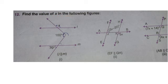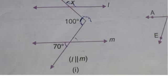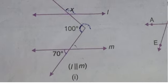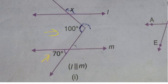In the first figure, we can see that l is parallel to m. A few angle measures are given: this one is 70 degrees, this is 100 degrees, and we have to find x, which is marked here.